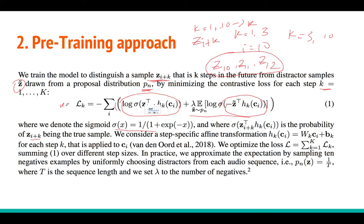For k equal to 1, for example, and if I have 10 k's, I get 10 different losses, L1 through L10. The total loss is the sum or mean of all L_k. P_n of z comes from a uniform distribution, where capital T is the length of your audio data. Lambda is the number of negatives — if you want 10 distractor samples, you set lambda equal to 10. You get different L_k for different k's, where capital K could be 10, meaning you find the contrastive loss for the next 10 future samples from the current time step.